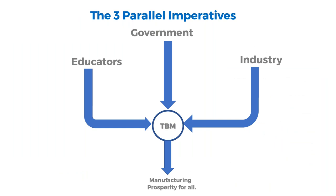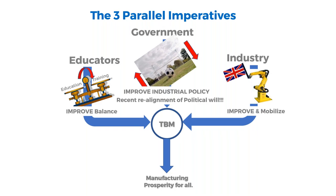The three parallel imperatives to make reshoring and take back manufacturing happen are threefold. First, we need government to start working on industrial policy, increase political will, and get a realignment so that we have a level playing field for reshoring and returning manufacturing to a localized economy. That's definitely a government priority, and as advocates we've been campaigning in that regard.